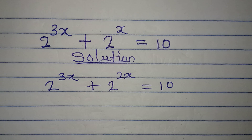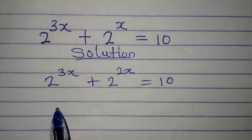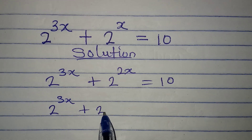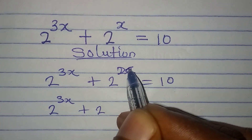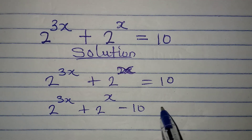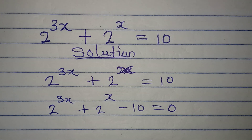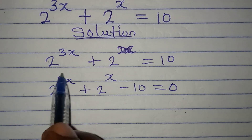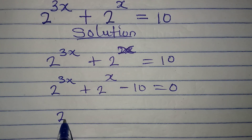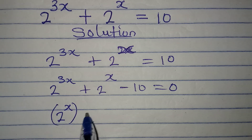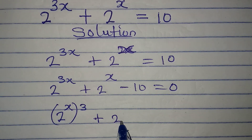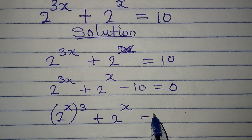The first step I'm going to take is bringing everything to the left, so I have 2 to the power of 3x plus 2 to the power of x minus 10 equals zero. But then I can work on this first term.